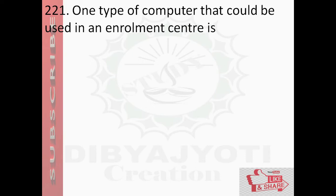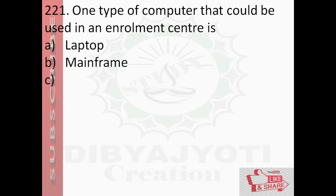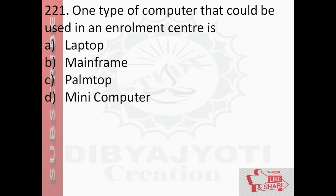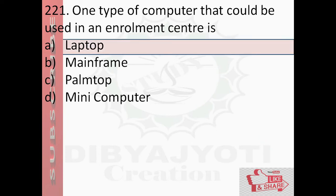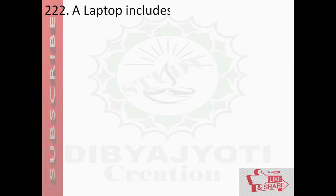Question number 221: One type of computer that could be used in an enrollment center. Options are: option A, laptop; option B, mainframe; option C, palmtop; option D, mini computer. And the answer is option A, laptop.